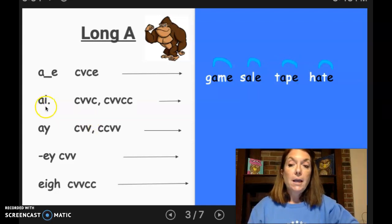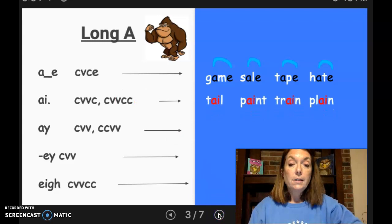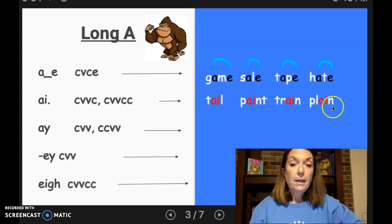Another spelling is AI. And you'll find AI in the middle of a word. We have consonant, vowel, vowel, consonant, and consonant, vowel, vowel, consonant, consonant. Let's look at the words we have with the long A spelled that way. And we have tail, paint, train, and plain.